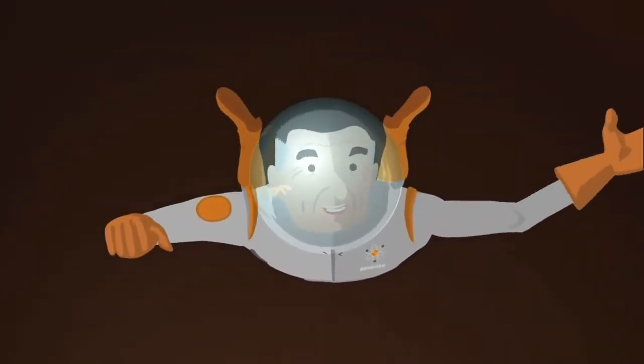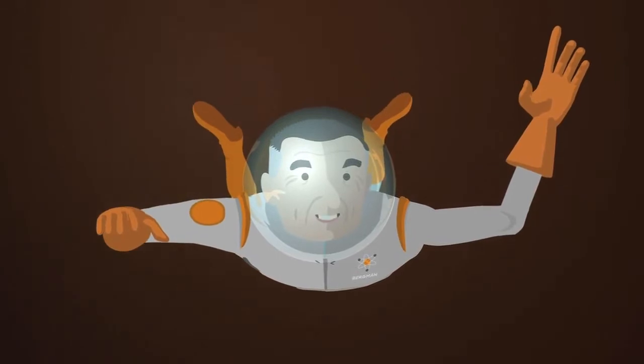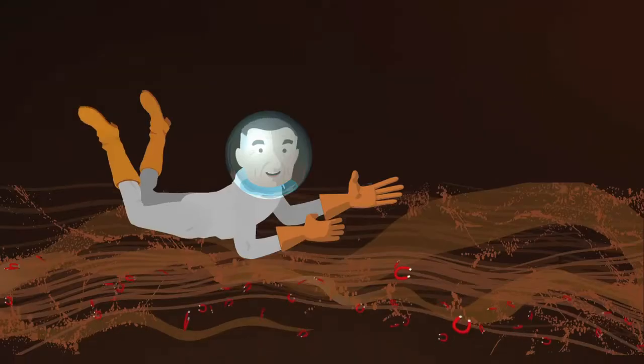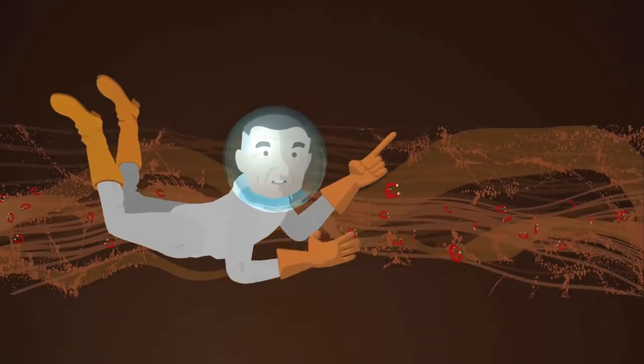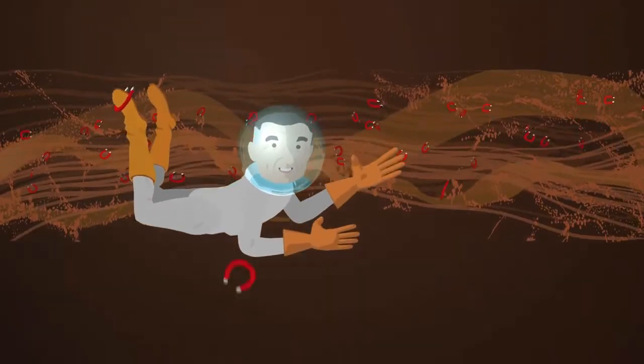That's right, empty! Between the nucleus and the electrons, there are vast regions of empty space. Now, technically, there are some electromagnetic fields, but in terms of stuff, matter, it is empty.